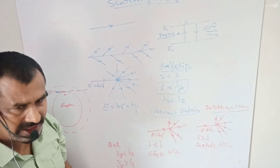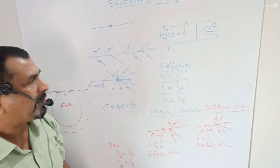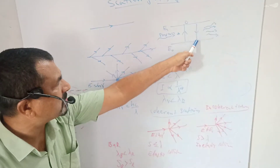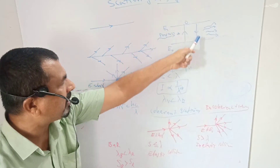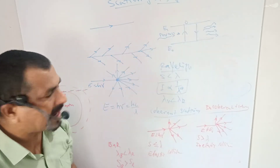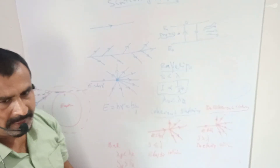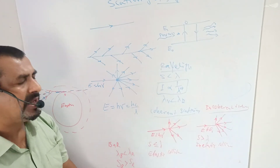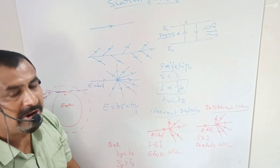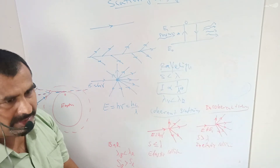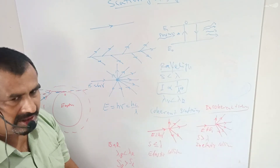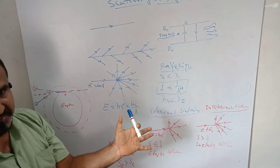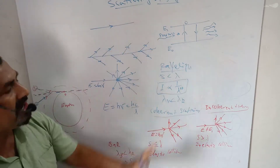The particle or atom is then shifted from the ground state to the excited state. We know that higher orbits are unstable. Thus, within a time of 10 raised to minus 8 seconds, the atom jumps from the higher orbit to the lower orbit — that is, from a higher energy state to a lower energy state. When this atom jumps back to the ground state, it re-emits the absorbed light. This re-emitted light spreads in all directions, and hence scattering takes place.